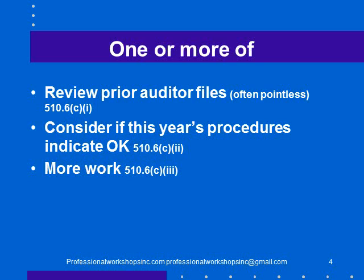So we're normally stuck with the second procedure: consider if this year's procedures indicate that everything's okay. If we find a huge bad debt expense that's for last year, that could indicate a mistake last year. But if the bad debt expense this year is small and consistent with last year, that leads us to believe accounts receivable was right last year. We only have to do one of those three procedures, and if the second one works, that's all we have to do.